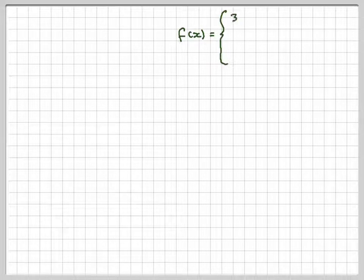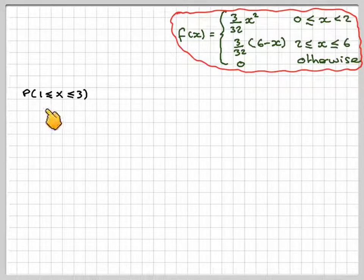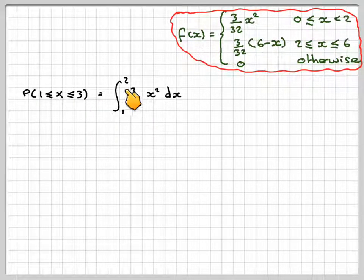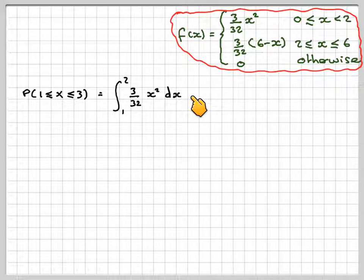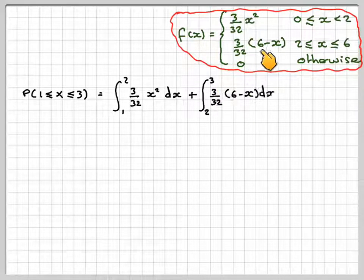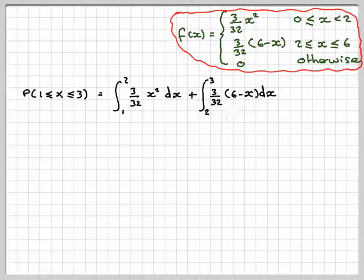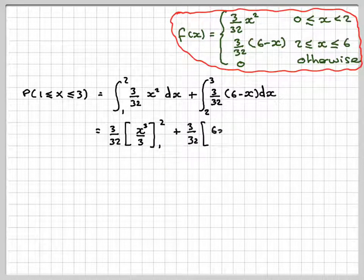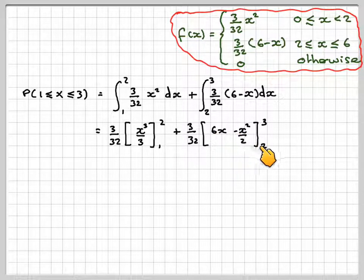So we now have to find, writing out the functions again, we now have to find the probability of x being between 1 and 3. So we have to integrate between 1 and 2 because this one behaves, from 1 to 2 behaves like that. And then we have to add to that the integral from 2 to 3 of the other one. We need to write that integral out now with the value of k in. So we're going to get 3/32 x³/3 again from 1 to 2. So it's the same integral we've just done already.